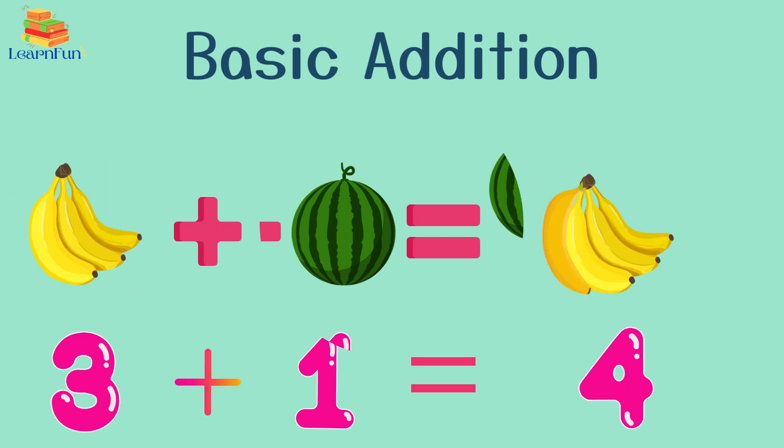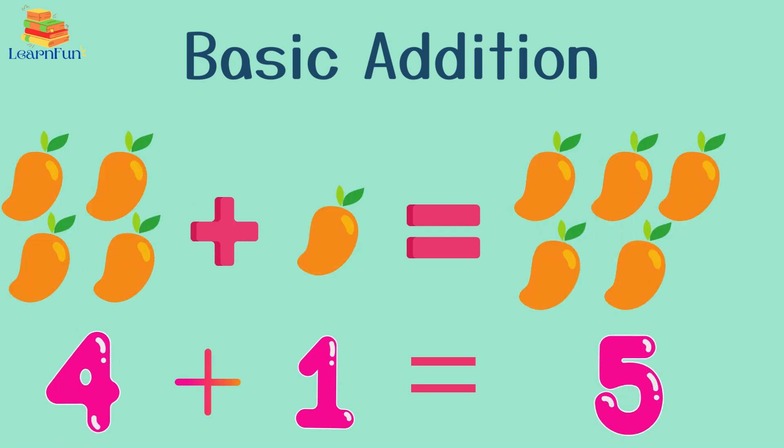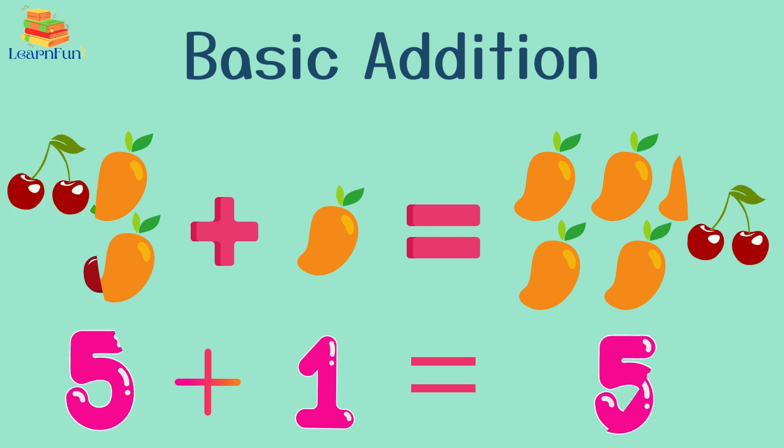Three bananas plus one banana equals four bananas. Four mangoes plus one mango equals five mangoes.